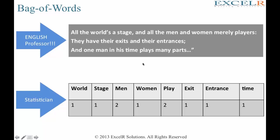An English professor would go on and on explaining about these three lines for hours together. But for a statistician, they would look at this passage differently. A statistician would say, no matter who has written this — world is used once, stage is used once, the word men is used twice, women is used once, play is used twice, exit is used once, entrance and time are used once.